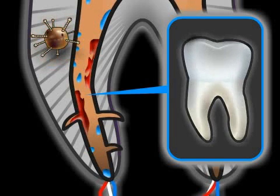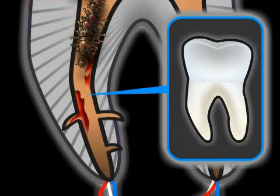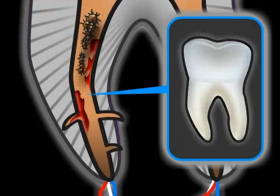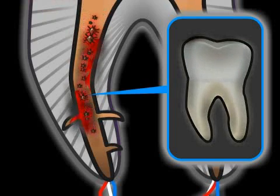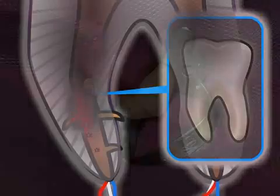Dark discolorations of the tooth after a root canal treatment are indicative of blood and careless work during the treatment. Normally, the canal should be clean and free of blood and bacteria. If this is not the case, bacteria will break down the blood, and the iron present in the blood pigment hemoglobin will darken the tooth area.